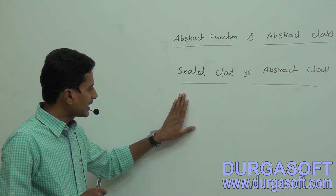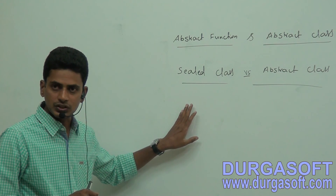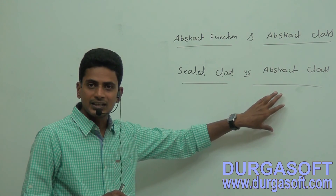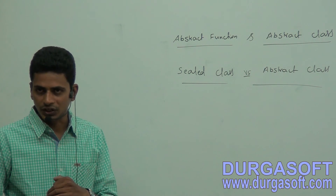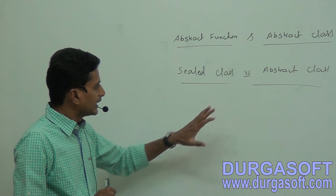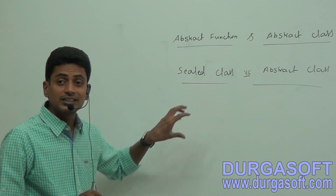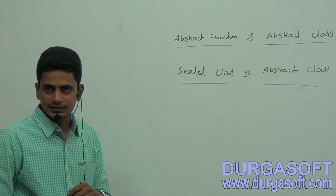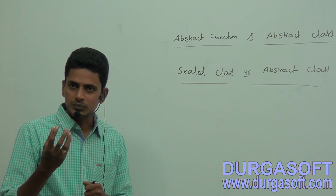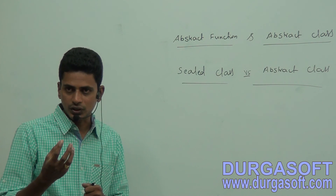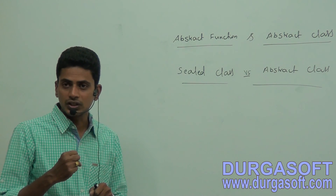We can create an object to a sealed class for providing functionality, but we cannot create an object to an abstract class for providing functionality to its abstract functions. Sealed class is completely opposite to abstract class. Abstract class can contain abstract functions and non-abstract functions, but sealed class can contain only non-abstract functions.